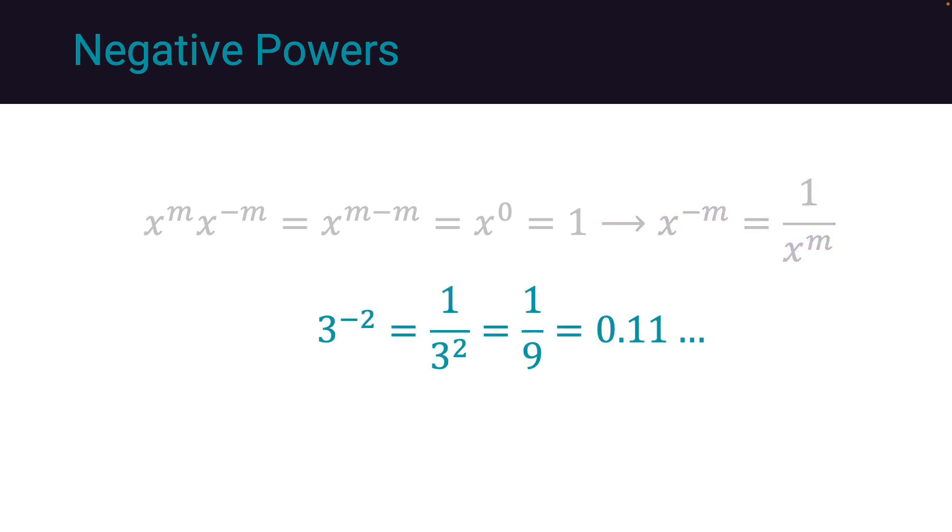As an example, 3 to the power of negative 2 is equal to 1 over 3 to the power of 2, which is 1 over 9 or 0.11.